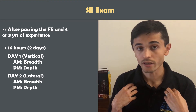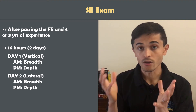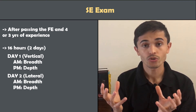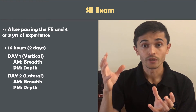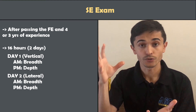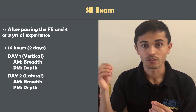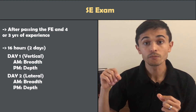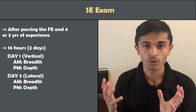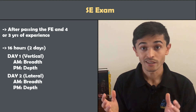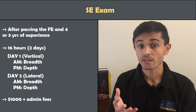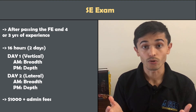You also choose whether you're taking the buildings or bridges track. In my case I would take the buildings portion. Day one covers all vertical forces — general structural engineering in the morning and buildings-specific content in the afternoon. The morning sessions are multiple choice; the afternoon sessions require you to work out problems. The same structure applies to day two, but focused on wind and seismic lateral loads. It's a very expensive exam — $500 each day, so roughly $1,000 for both days plus any state admin fees.